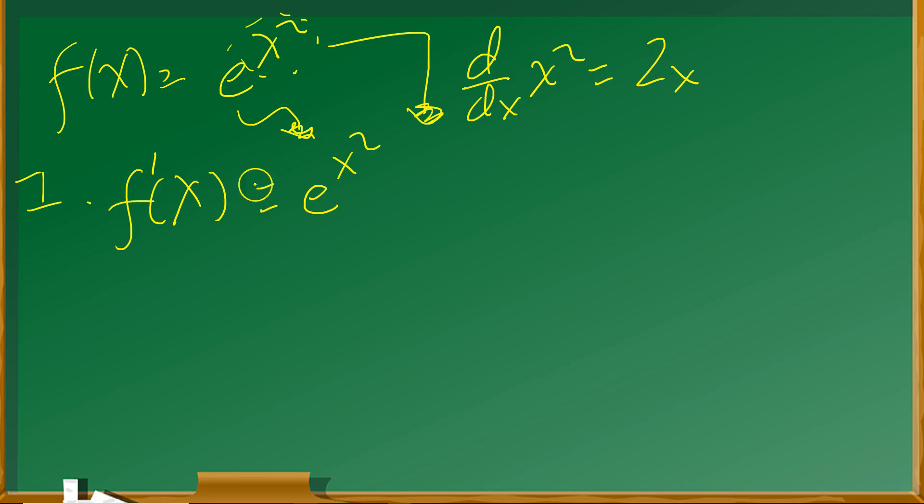So you multiply down below: f prime of x equals e to the x squared times 2x. And lastly, we just usually write this so it looks a little more neat as f prime of x equals 2x e to the x squared, and that is the final answer.